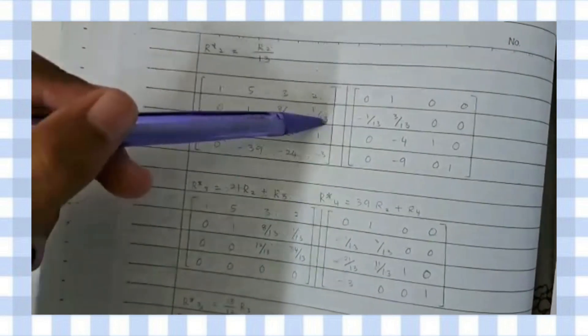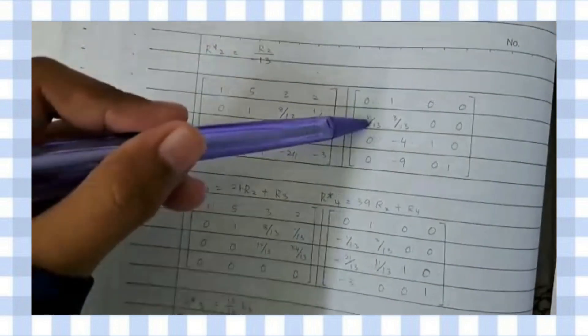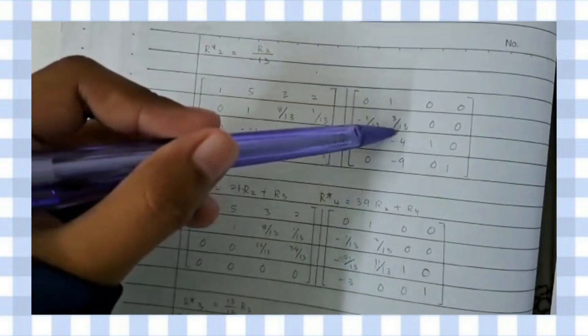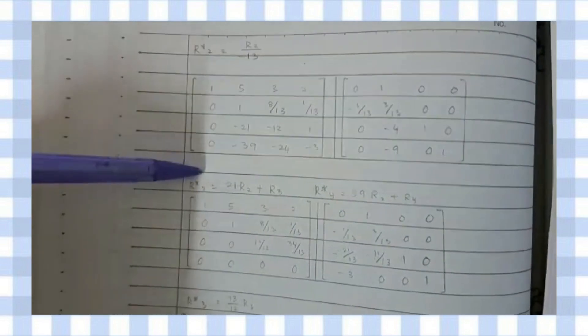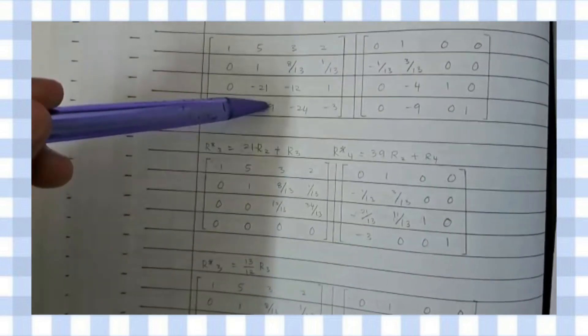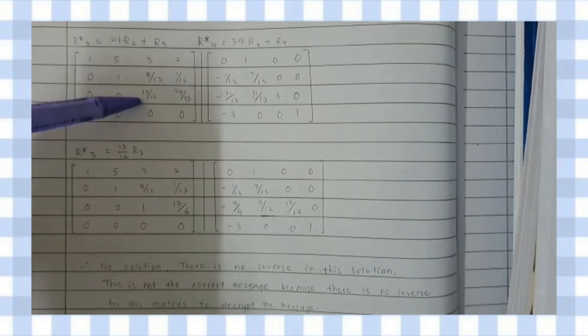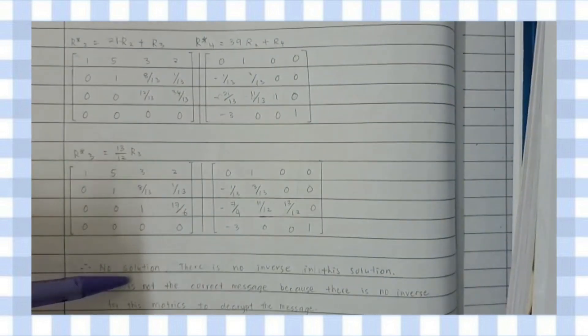Next, we divide R2 by negative 13, so the new R2 will be: 0, 1, 8/13, 1/13, negative 1/13, 3/13, 0, and 0. The other rows remain the same. We then need to change the negative 21 and negative 39 to become zero, but at this point there is no inverse — so there is no solution for matrix K2.